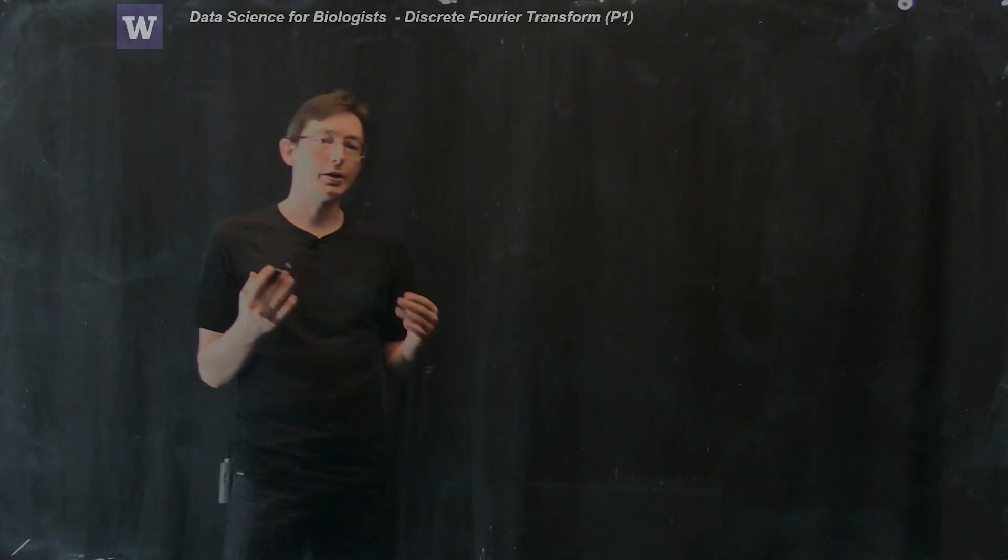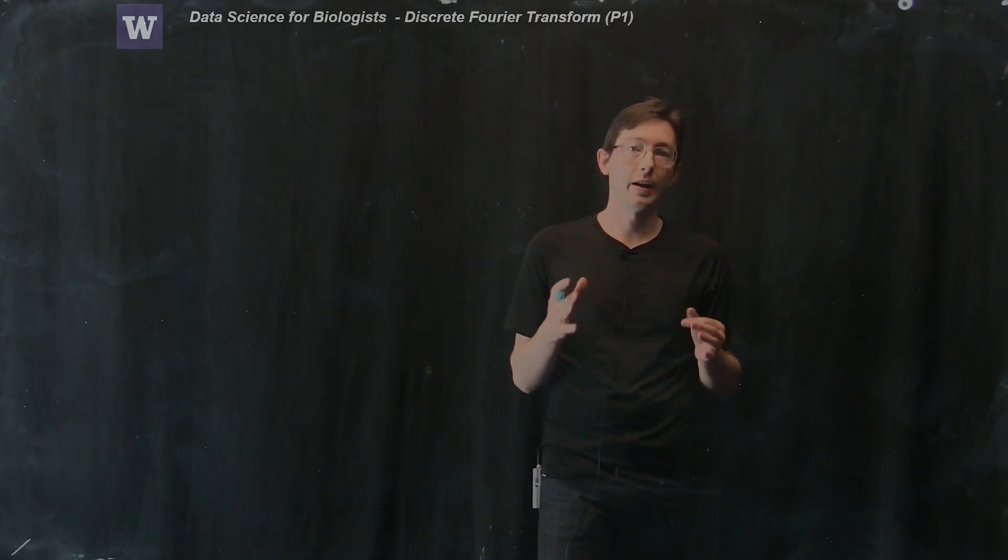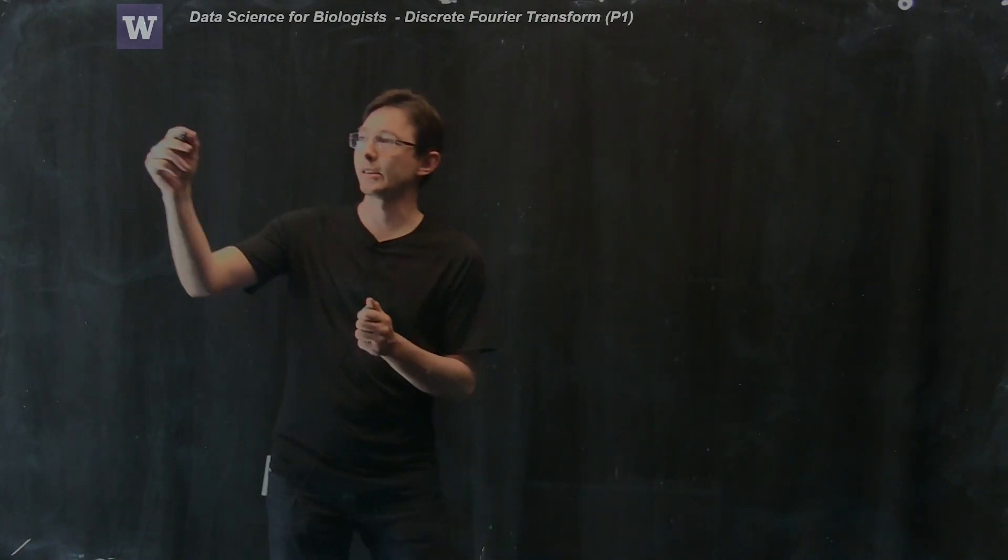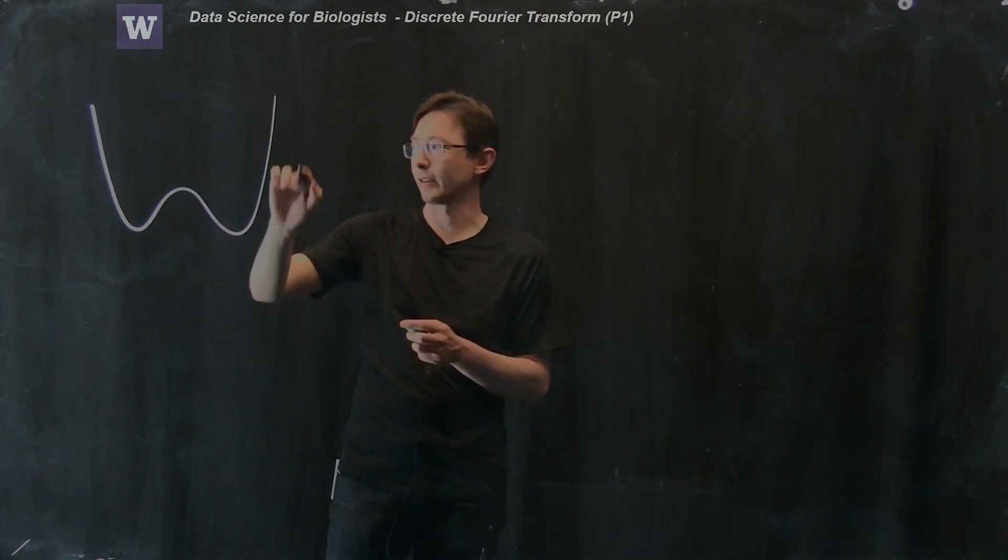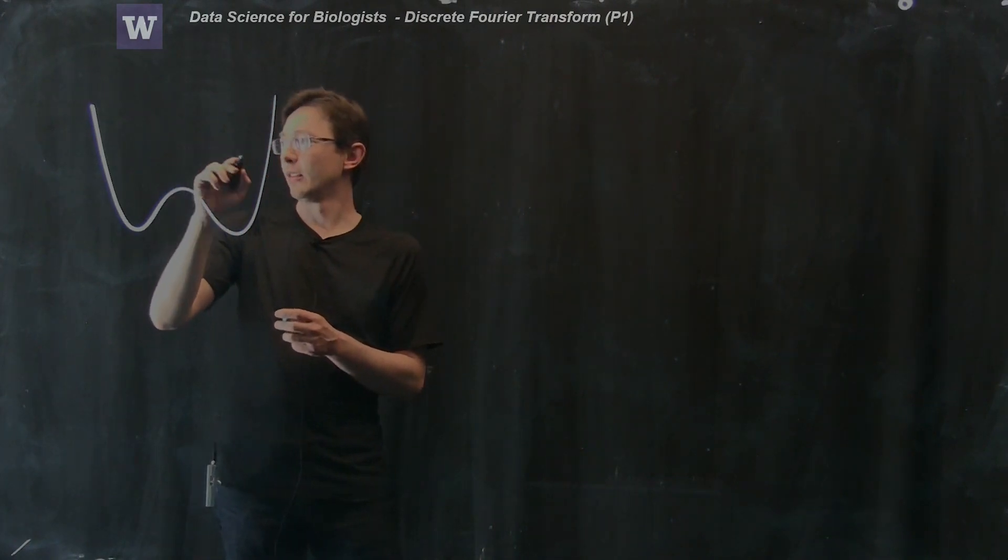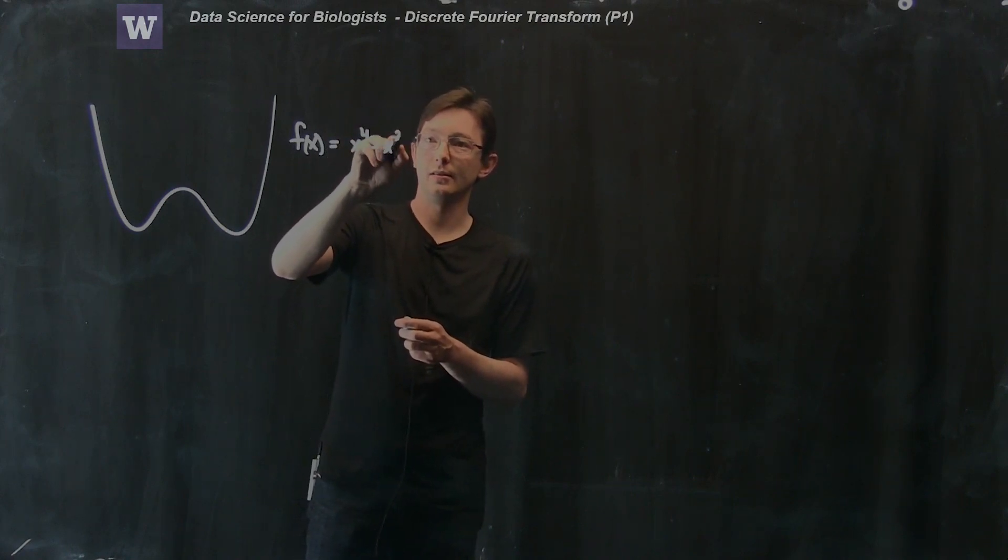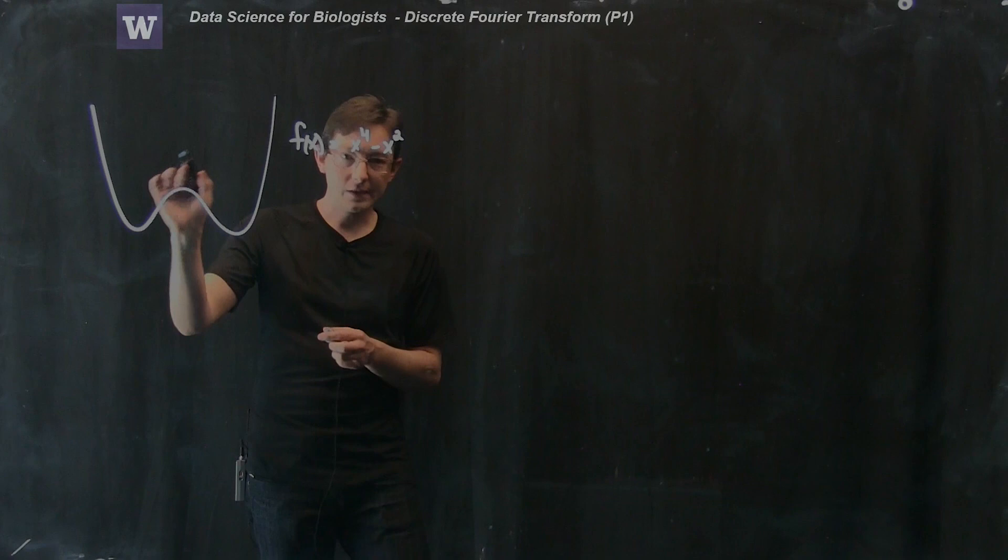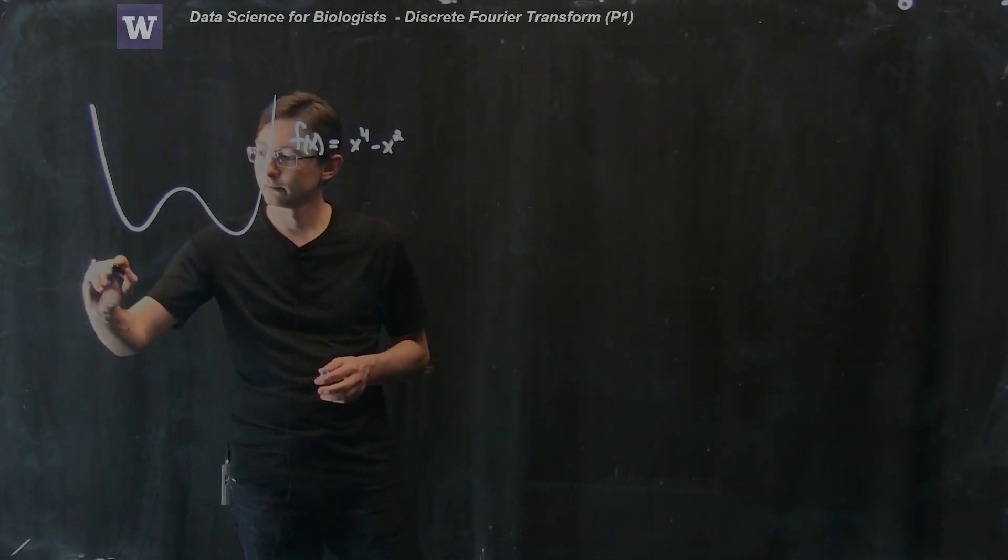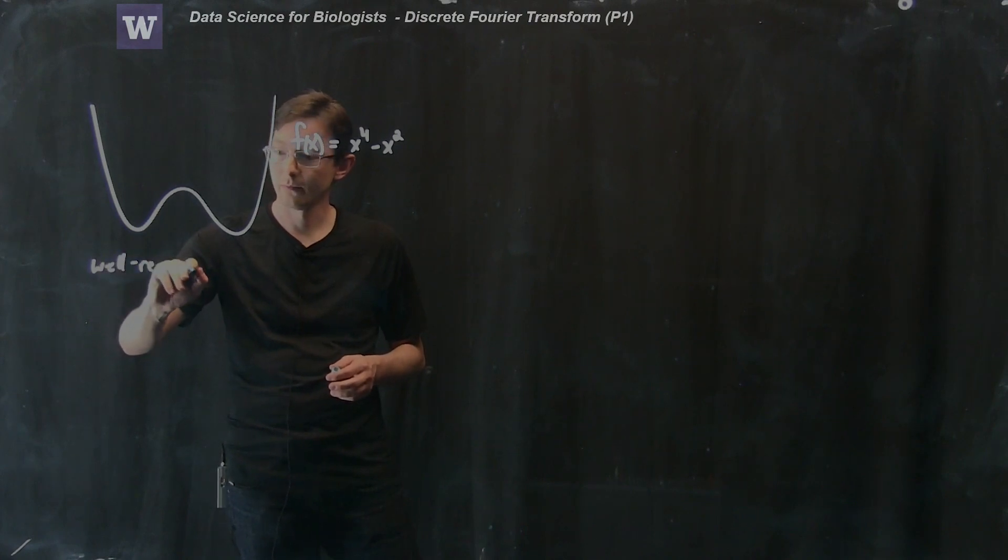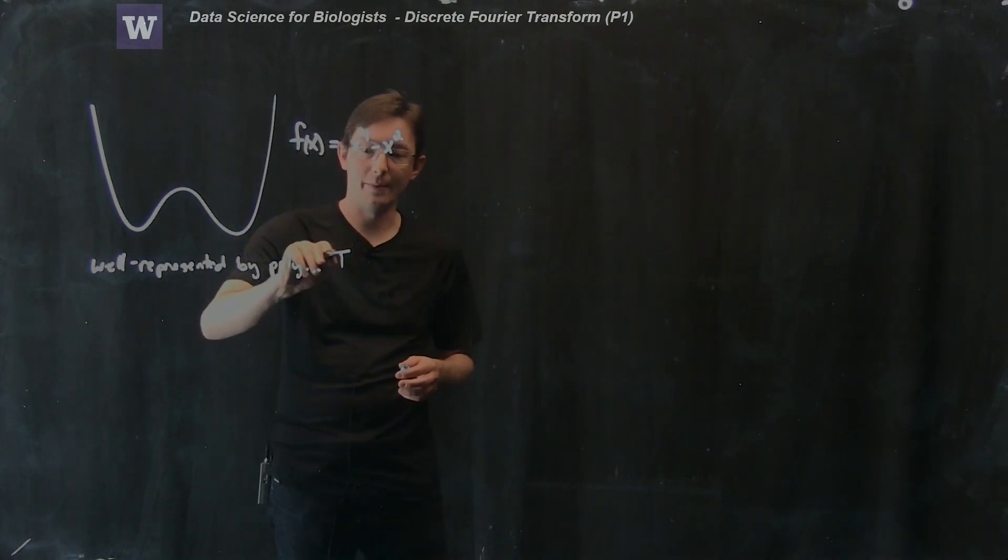So the Fourier transform is basically built on this idea that some functions are better approximated with sines and cosines. We're used to thinking about Taylor expansions. So if I have some function like a quadratic, this is like a fourth order function f of x equals x to the fourth minus x squared, something like that. This function is well represented by a Taylor series. It's well represented by a polynomial. So that makes you think Taylor series.